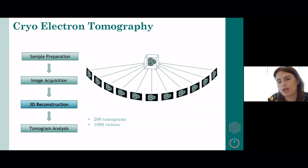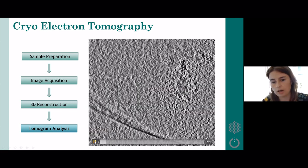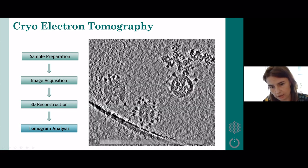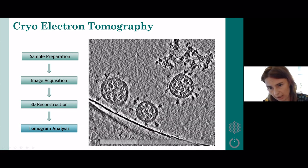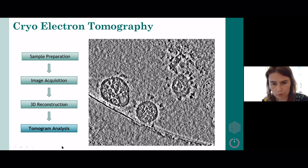Out of 300 tilt series, we ended up with 266 tomograms reconstructed. In total these contain 1096 virions that we could then analyze. Here I show you the tomogram slicing through it. You can see the virions, the spikes, the insides. It's very nice, slicing through all the way.